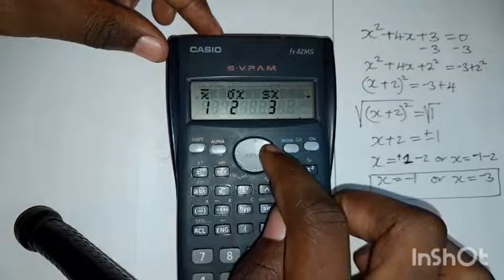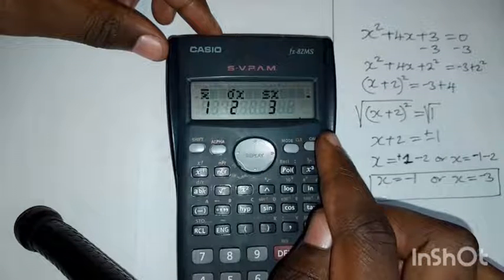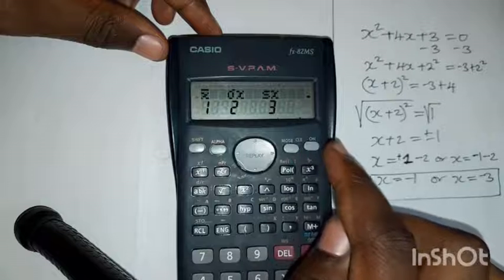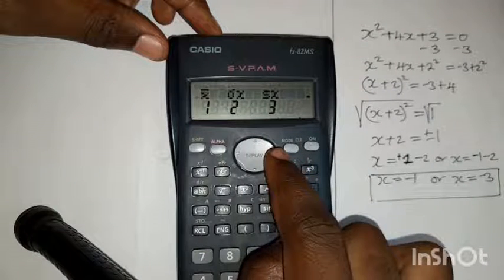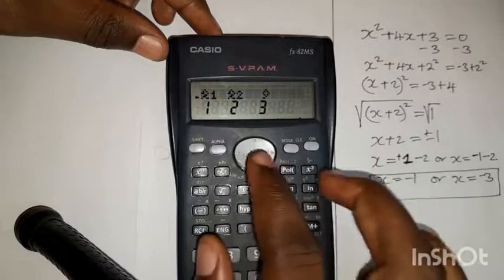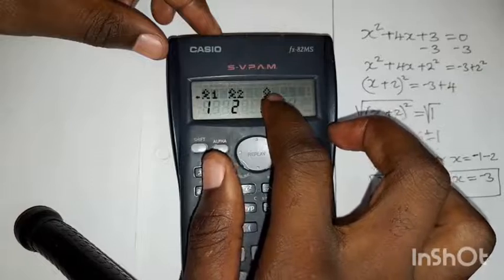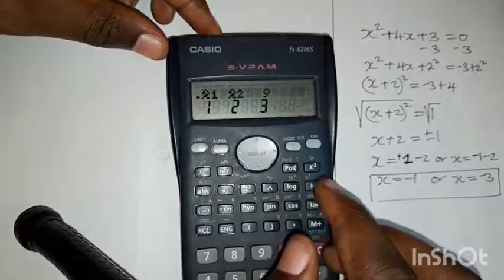Until you find the X1 value and the X2 values. Let's do that. 1, 2, 3. So you see that after pressing three times, we have X1, X2, and this is like the value of the Y-intercept, the C.